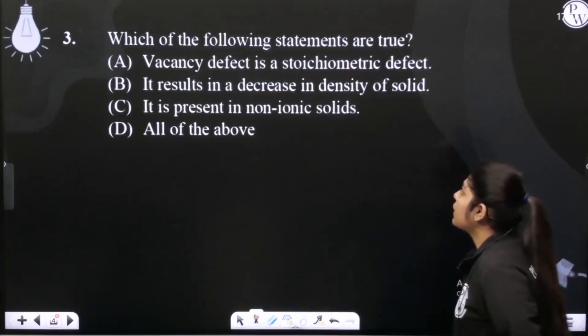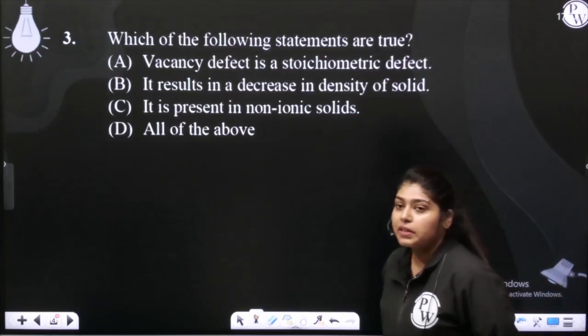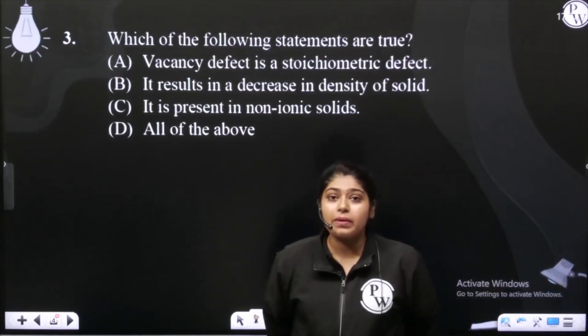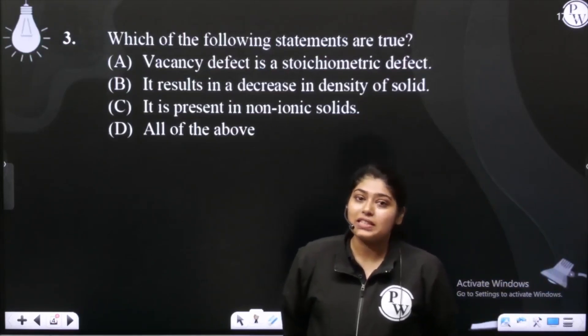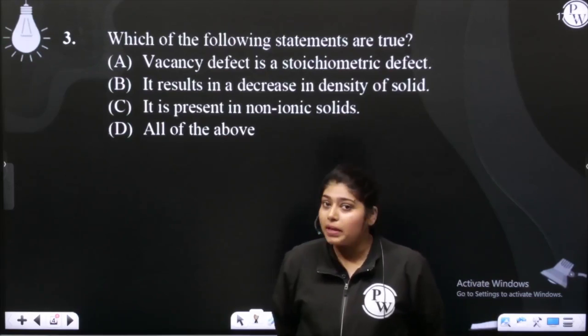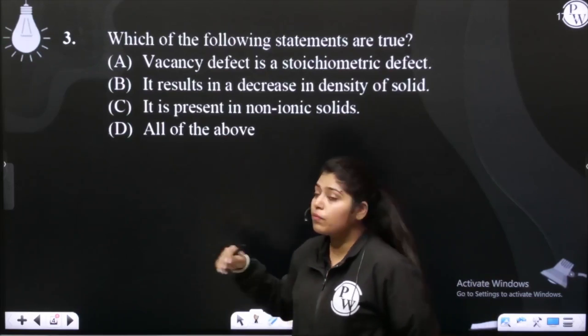Vacancy defect is an example of a stoichiometric defect. Stoichiometric defects are of two types: vacancy defect and interstitial defect. Now, the points are given to vacancy defects.